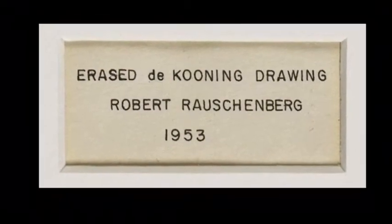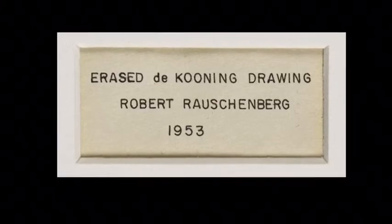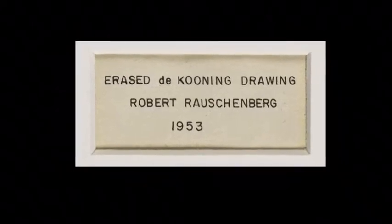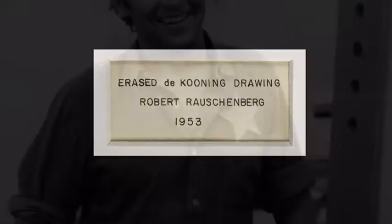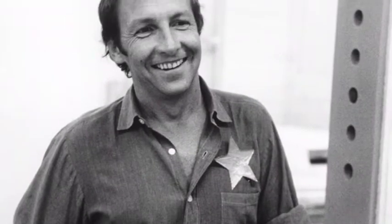One of his most controversial works would be Erased de Kooning Drawing, 1953. Rauschenberg loved drawing and wanted to include drawing in his series. He wanted to incorporate the eraser and showcase the art in subtracting from a piece versus adding to it. When it comes to drawings, the eraser is a fundamental tool. Essentially, Rauschenberg drew, then erased his own piece, but felt it would just be Rauschenberg and doesn't tell the story he intended.